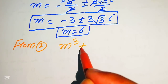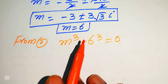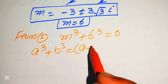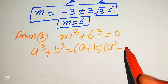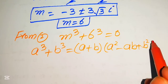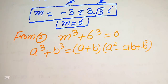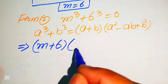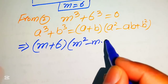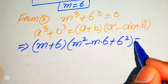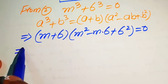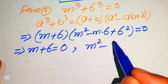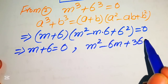Equation number 2 is m cubed plus 6 cubed equals to 0. We apply the sum of cubes formula: a cubed plus b cubed equals a plus b times a squared minus ab plus b squared. Expanding our equation gives m plus 6, times m squared minus 6m plus 36, equals to 0. We divide this into two cases: m plus 6 equals to 0, and m squared minus 6m plus 36 equals to 0.